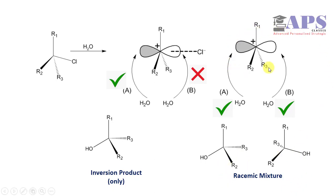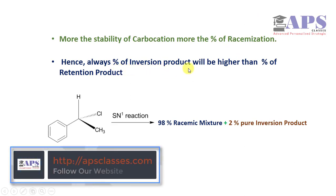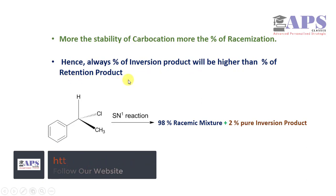So if carbocation is highly stabilized, it can easily form solvent separated or completely separated carbocation. Now we can simply say that the percentage of inversion product will be higher than the percentage of retention product in all SN1 reaction cases.